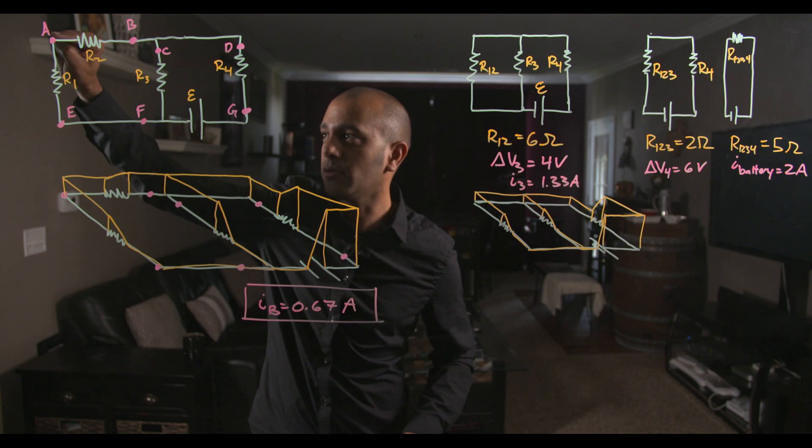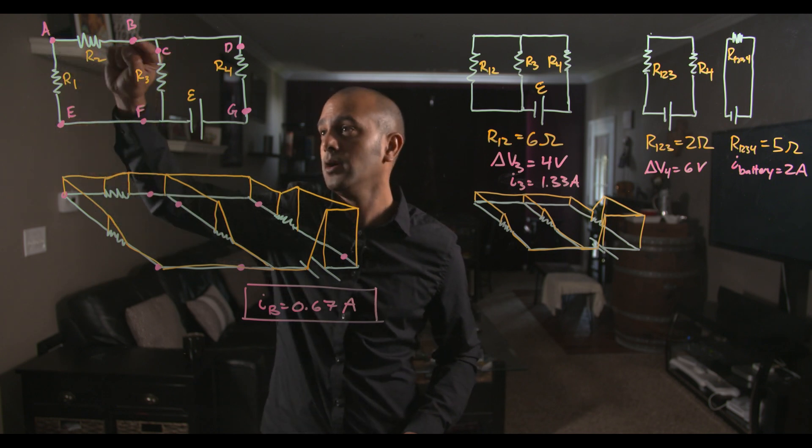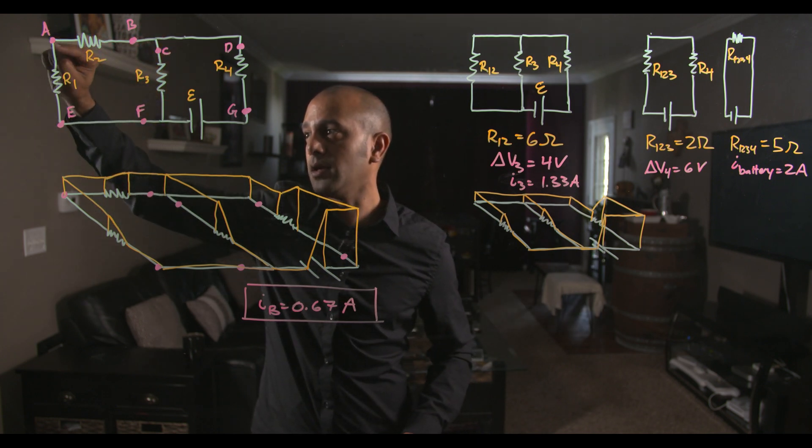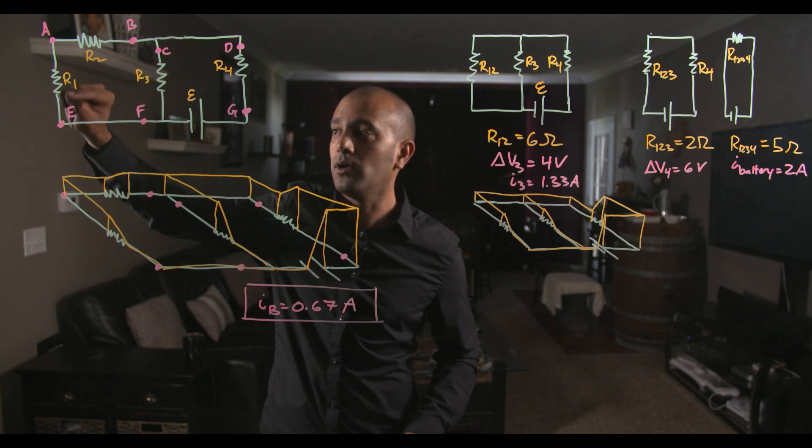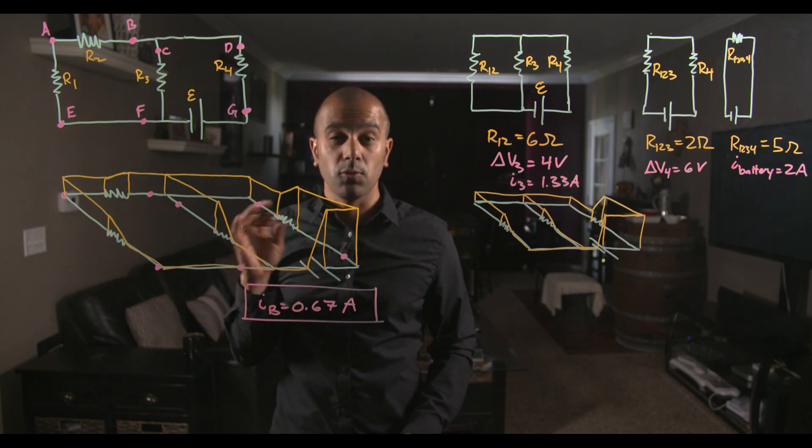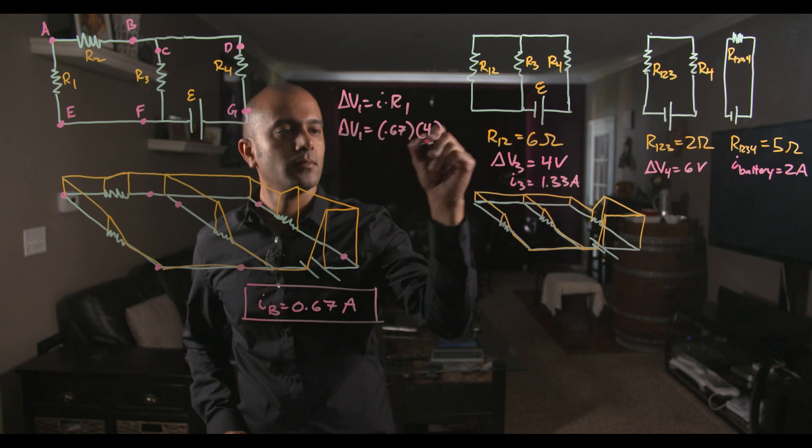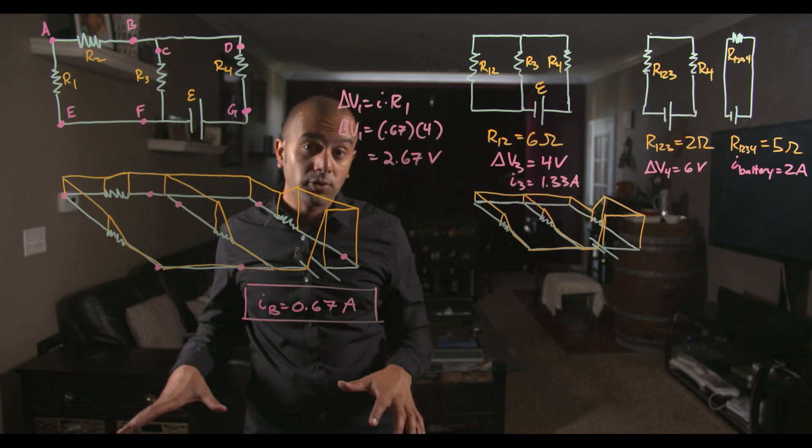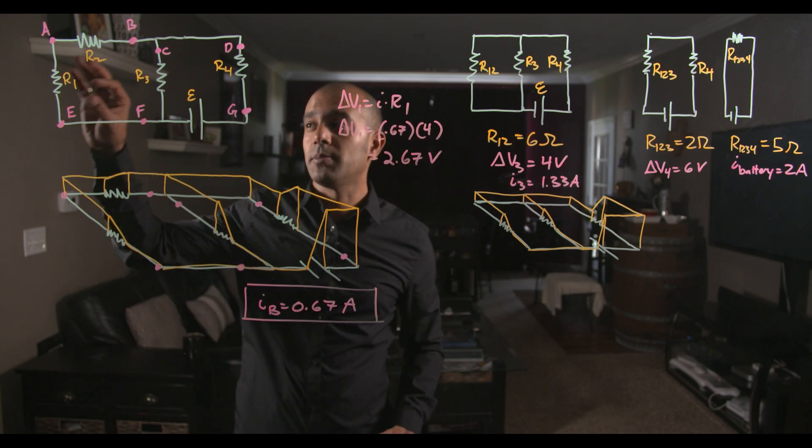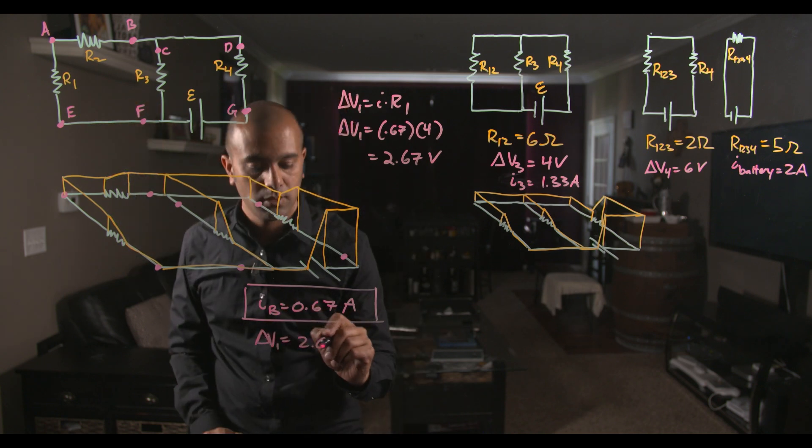Now the current going through here, of course, doesn't change because you're not crossing any forks in the circuit. So 0.67 amps through R1. We can solve using Ohm's law in one step to find the voltage drop across that resistor. So the answer to the final question is the voltage drop across resistor 1 is 2.67 volts.